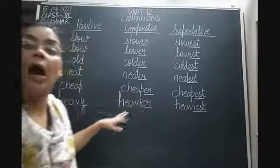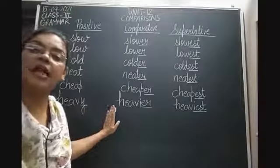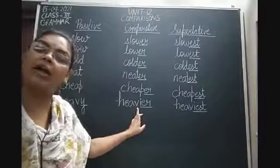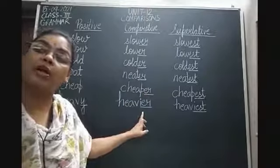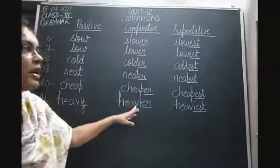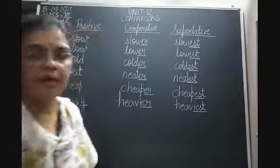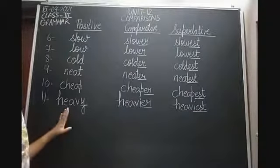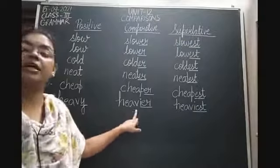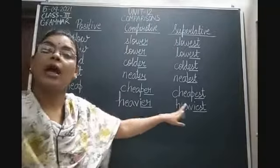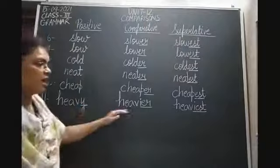For adjectives ending in Y in the superlative degree, we remove Y and replace with IEST. So for comparative degree, remove Y and add IER; for superlative degree, remove Y and add IEST. Heavy, heavier, heaviest. To summarize the Y-rule: comparative — remove Y, replace with IER; superlative — remove Y, replace with IEST.